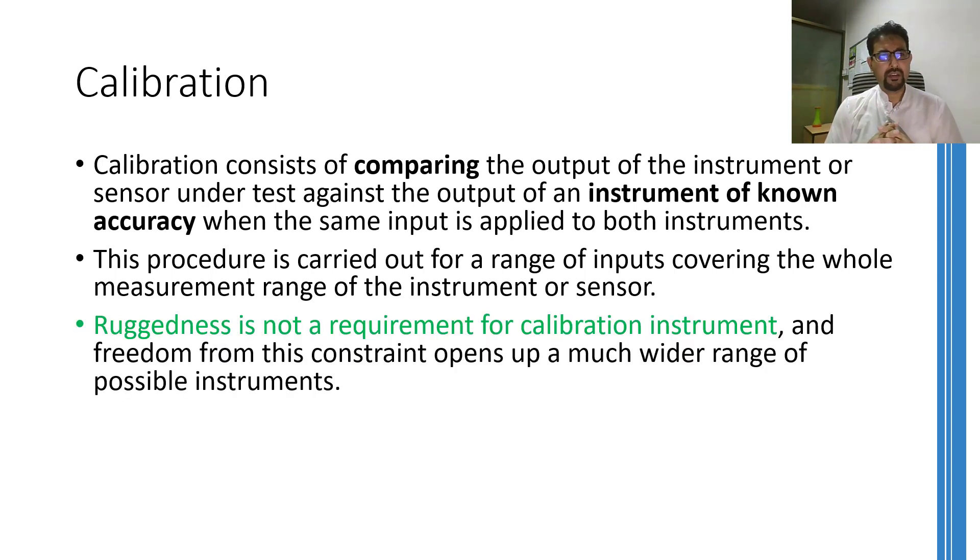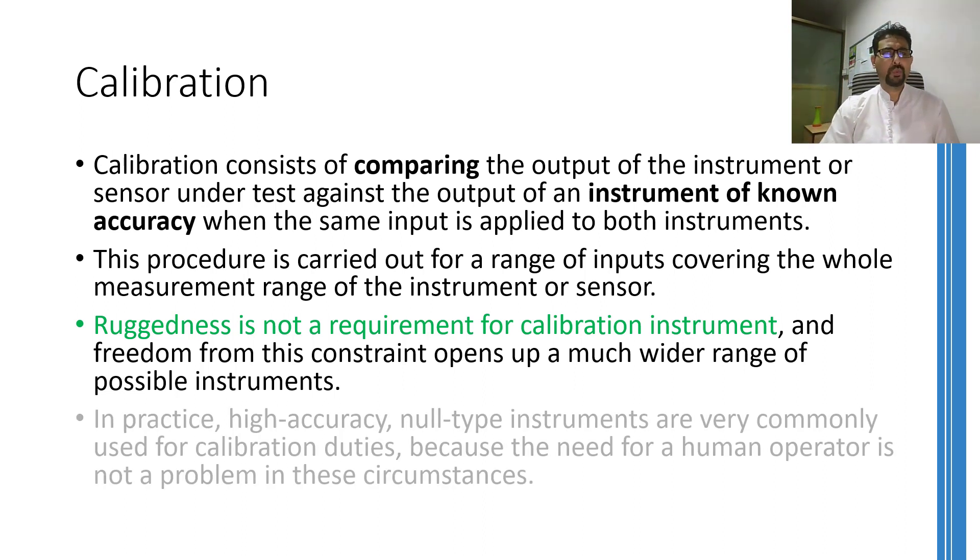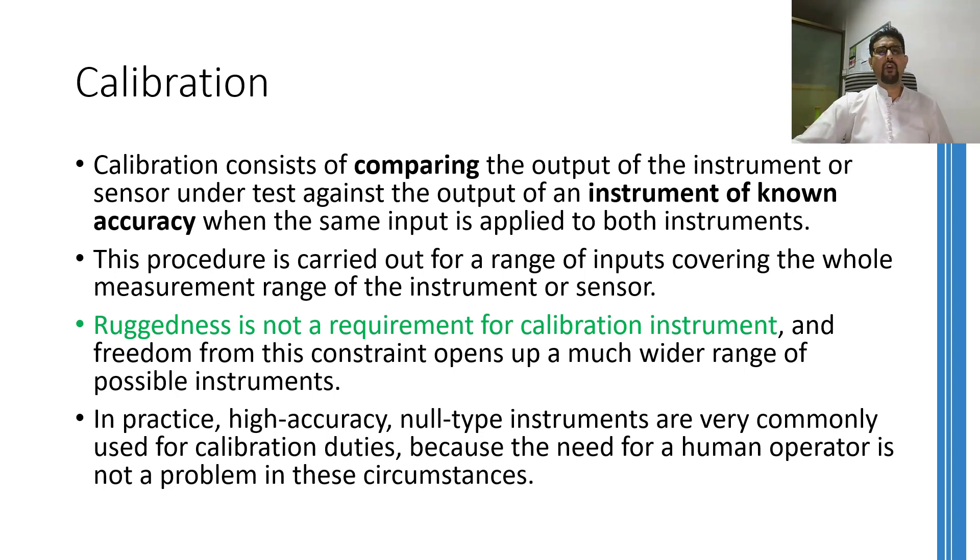If we talk about calibration instruments, that instrument must have an established accuracy. And as that instrument doesn't need to be operated in harsh environment and should only be kept in the lab environment in some controlled environment, therefore ruggedness is out of the list of requirements for this instrument. And you can well appreciate that if you remove this requirement, then it opens up a number of possibilities. We can have very good, very accurate sensitive equipment, which we know will never be used in any harsh environment. Therefore, in practice, high accuracy null type instruments are commonly used as calibration instruments. And as human involvement is not an issue over here, because you have to supervise the calibration process, the requirement of operating null type instrument by humans is not an issue now.